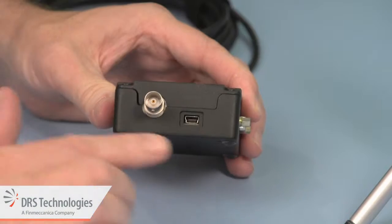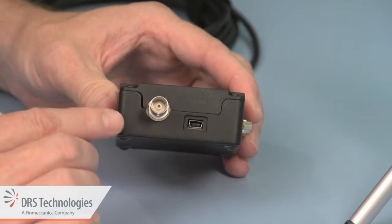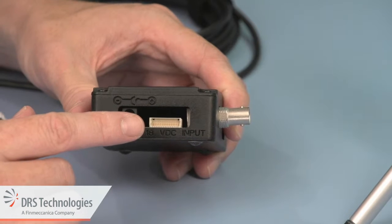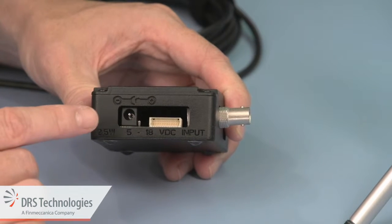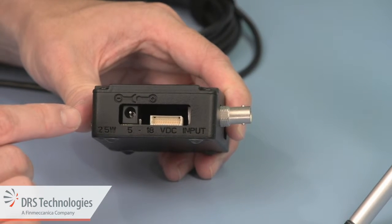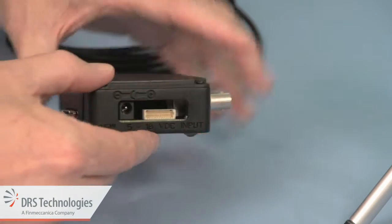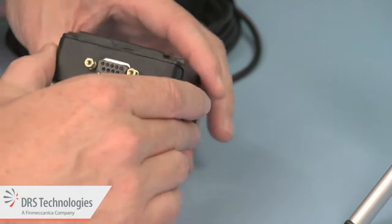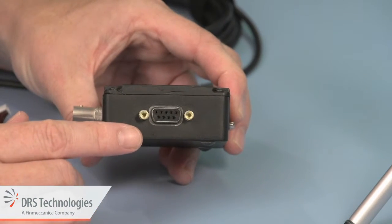On the breakout box you'll see a mini USB connector, a BNC connector, a 30 pin electrical interface, a power jack used with an RS-232 connection, a digital video camera connector, and finally an RS-232 connector.